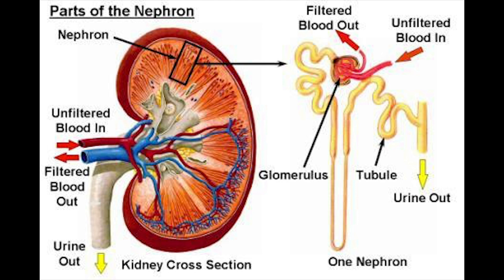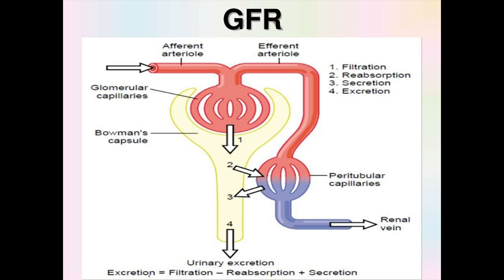From that we can estimate kidney function, and the estimated kidney function is called estimated GFR, or glomerular filtration rate. Glomerular filtration rate is defined as the total amount of waste filtered by all the filtering units of the kidneys in one minute. From that, many equations were developed that incorporate creatinine, age, gender, and race into an equation to come up with an estimation of this GFR.